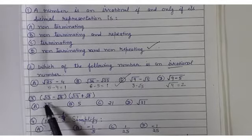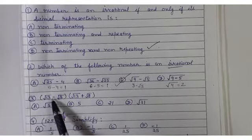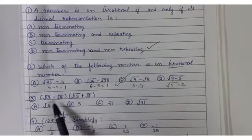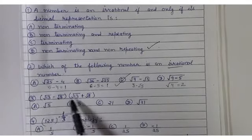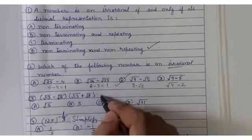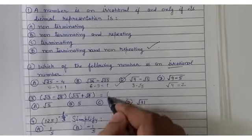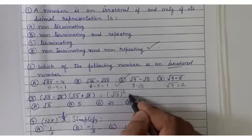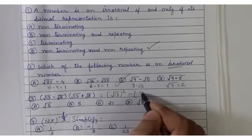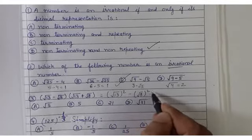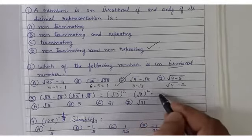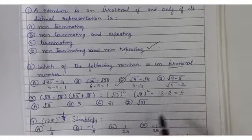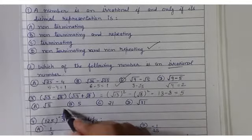Third question: (√13 − √8)(√13 + √8). This simplifies to 13 − 8, which equals 5. So 5 is your answer.